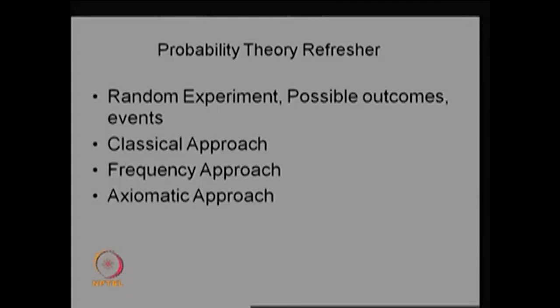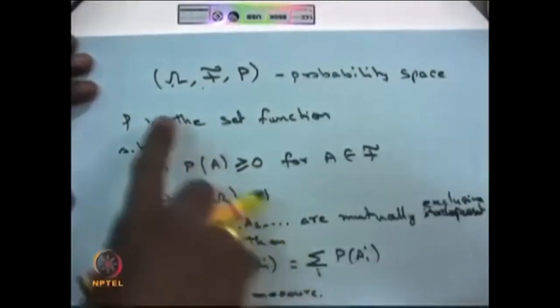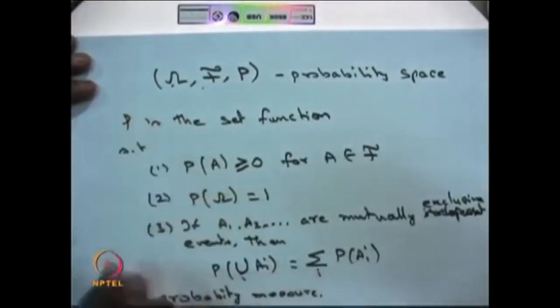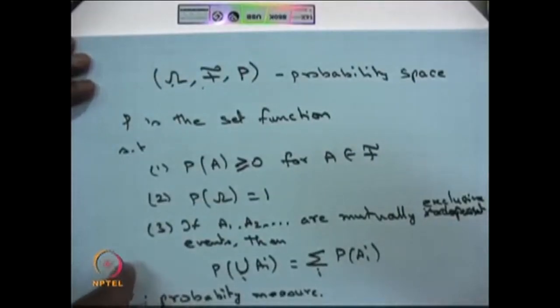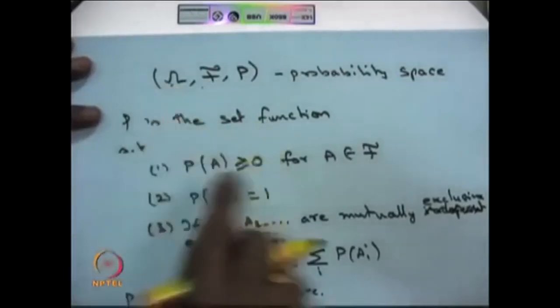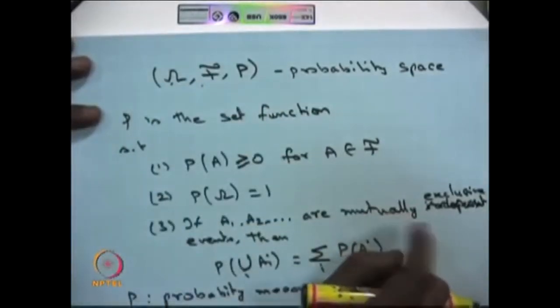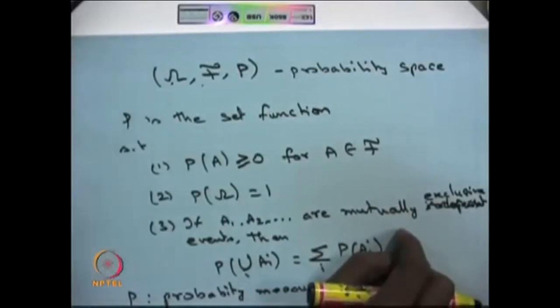There are many definitions of probability — the classical approach, the frequency approach, and what we have given here is the axiomatic approach. The way we defined the probability space with omega, F, and P is the axiomatic approach, and we are going to use this throughout. Note that the classical approach is a special case of the axiomatic approach, where all possible outcomes are equally likely. Therefore, throughout this course we will use the axiomatic approach.